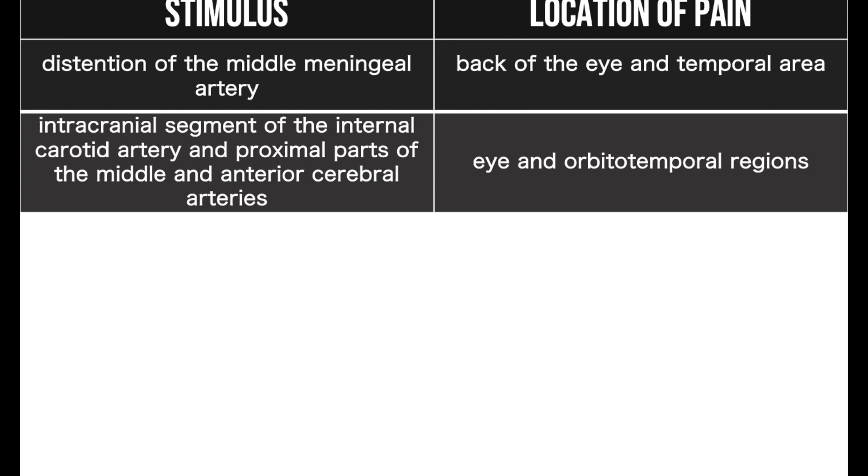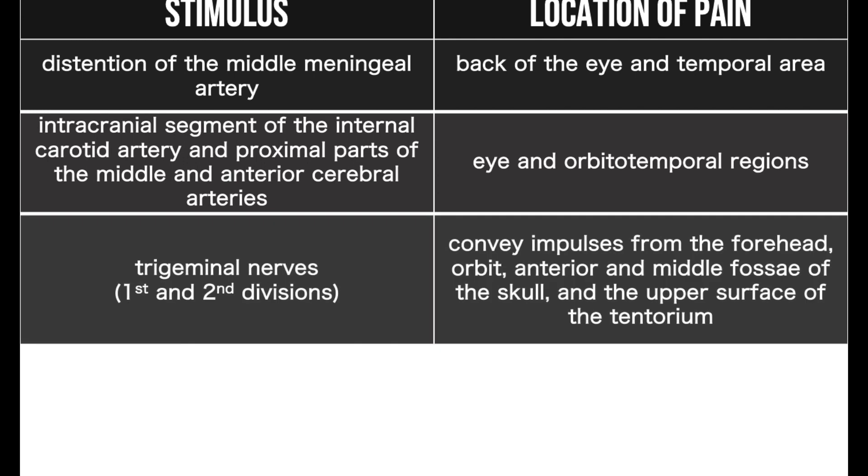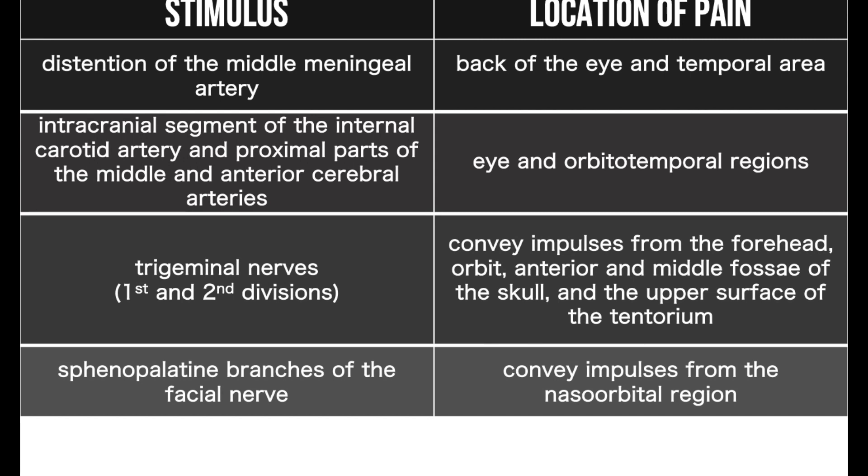Trigeminal nerves convey impulses from the forehead, orbit, anterior and middle fossa of the skull, and the upper surface of the tentorium. Sphenopalatine branches of the facial nerve convey impulses from the nasoorbital region.